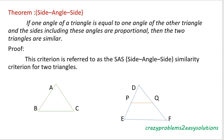Next theorem: Side-Angle-Side (SAS) similarity. If one angle of a triangle is equal to one angle of the other triangle, and the sides including these angles are proportional, then the two triangles are similar. This criterion is referred to as the Side-Angle-Side (SAS) similarity criterion for two triangles.